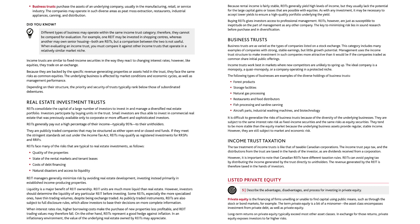Business trusts. Business trusts are as varied as the types of companies listed on a stock exchange. This category includes many examples of companies with strong, stable earnings but little growth potential. Management uses the income trust structure to make investment in such companies more attractive than it would be if the companies traded as common share initial public offerings. Income trusts work best in markets where new competitors are unlikely to spring up — the ideal company is a monopoly, a quasi-monopoly, or a company operating in a protected niche. Examples of the diverse holdings of business trusts include: forest products, storage facilities, natural gas processing, restaurants and food distributors, fish processing and sardine canning, aircraft parts, industrial washing machines, and biotechnology. It is difficult to generalize the risks of business trusts because of the diversity of the underlying businesses. They are subject to the same interest rate risk as fixed income securities and the same risks as equity securities, but tend to be more stable than the equity market because the underlying business assets provide regular, stable income.